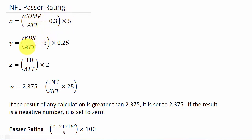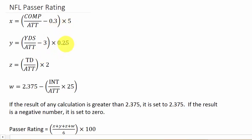Next, Y - that's yards over attempts minus 3, and then you multiply that times 0.25. That would be your average yards gained per attempt.